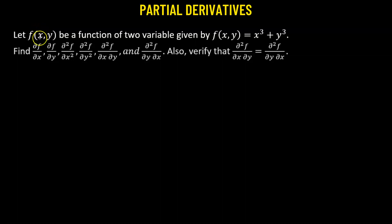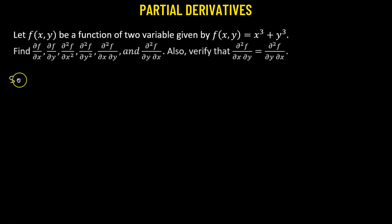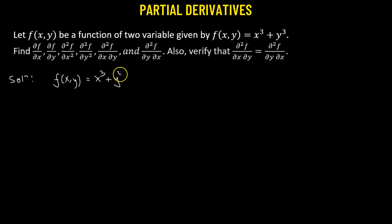We are given a function f(x, y) which is a function of two variables, given by x cubed plus y cubed. We need to find the partial derivatives of f with respect to x and y. Let's begin one by one. We'll first consider the function f(x, y) = x³ + y³. Let's label this as number one.